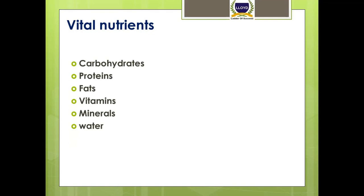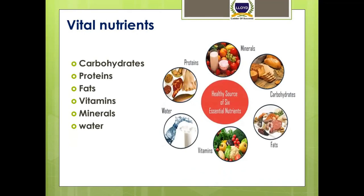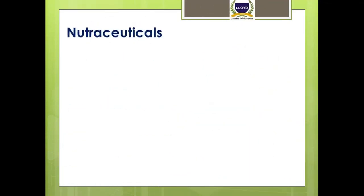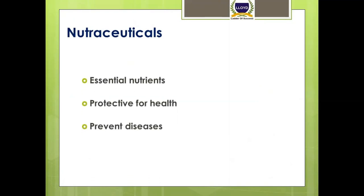We consume these in the form of food and are quite familiar to us. We are all aware about the functions and sources of these vital nutrients. But beside these nutrients, there are certain health promoting and essential nutrients which are also present in food and have protective and preventive functions for our body, and these are known as nutraceuticals. So the definition of nutraceutical is that these are essential nutrients that have protective and preventive functions.